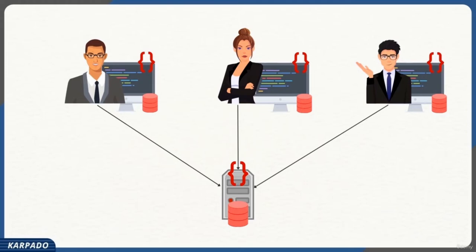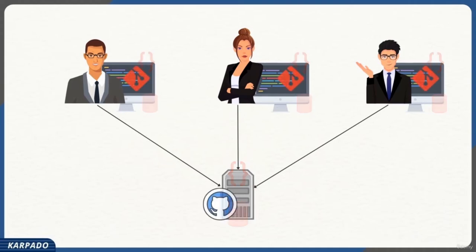If someone like Isha loses connectivity due to WiFi issues, she can still make progress because she has everything on her local computer. When her connection comes back, she can push the code to the centralized server for other developers. In case of data loss, every developer has a backup of the entire codebase. Examples of centralized version control systems include CVS, Subversion (SVN), and Perforce. Examples of distributed version control systems include Mercurial, Bazaar, and Git.